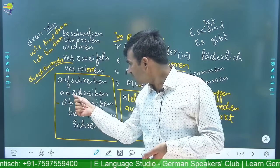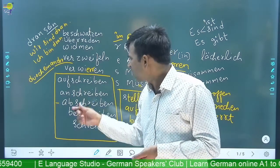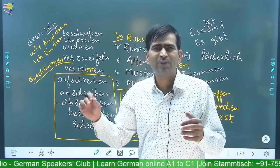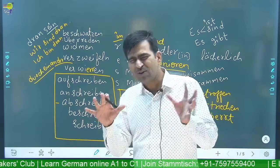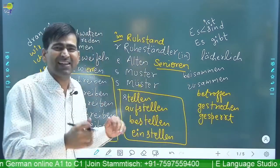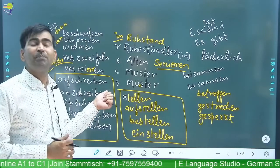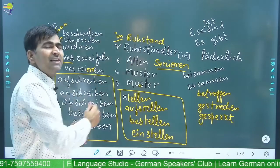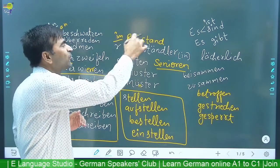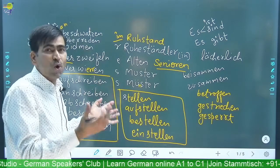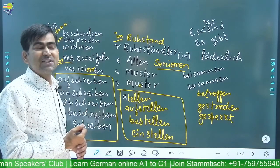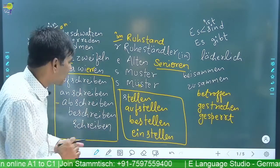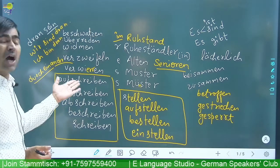But anschreiben — also aufschreiben. Aufschreiben: in general you note down something, maybe anything. Anschreiben ist auch irgendwie fast gleich, aber hier geht es besonders um die Statistik oder auf der Tafel schreibt man — board pe, diwar pe, notice board pe kuch number, kuch score. Score note karna hai us particular cheez ke liye — generally numbers ke liye hum log anschreiben use karte hain. In general you say aufschreiben.